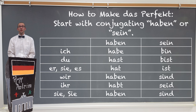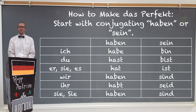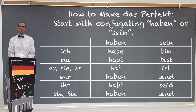In order to form this tense, you need to start off with having a form of either Haben or Sein. This looks exactly like the conjugation does whenever you conjugate in the present tense for each of these verbs. Sein is used with an intransitive verb — these are verbs that are either verbs of motion, or verbs that just don't take a direct object. Haben is used with all of the transitive verbs, basically all of the other verbs.